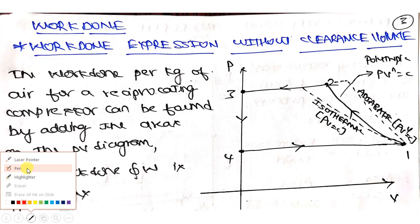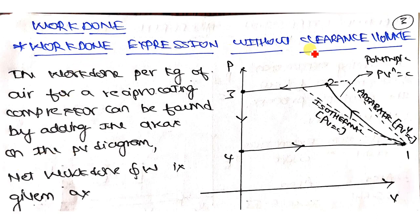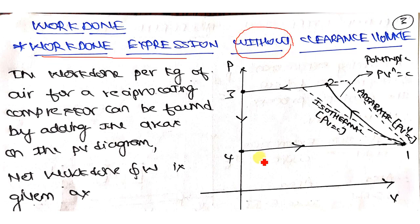In the continuation of the air compressor videos, in this particular video we will try to cover the work done expression without clearance volume and with clearance volume. We will be discussing how to derive the expressions for the work done in case of a reciprocating air compressor cycle, covering both derivations - one without clearance volume and one considering the clearance volume.